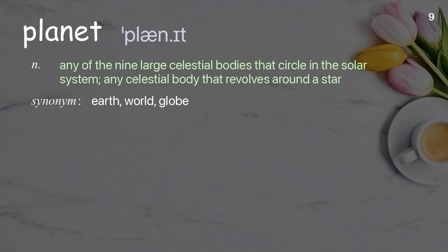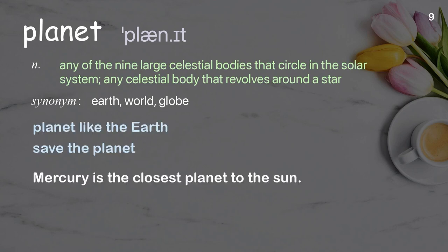Planet: Any of the nine large celestial bodies that circle in the solar system; any celestial body that revolves around a star. Examples: planet like the earth, save the planet. Mercury is the closest planet to the sun.